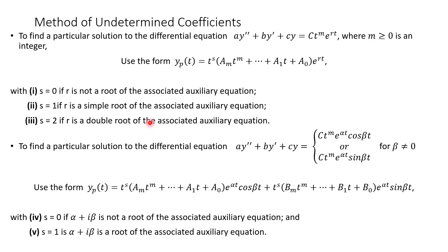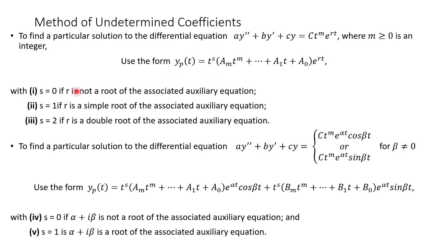Here's our method. There are two situations. To find a particular solution, notice in both situations we have our second-order differential equation, but what it equals is what matters — that's f(t). If the non-homogeneity has the format of some constant times t to a power times e to the rt, then we use this form of our solution. Depending on the roots of our auxiliary (characteristic) equation, we set s — the power on t — equal to 0, 1, or 2.